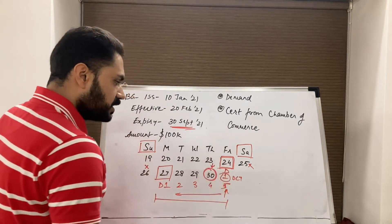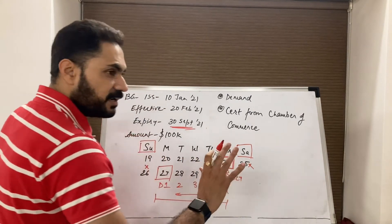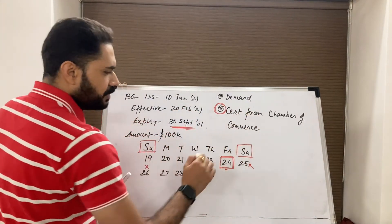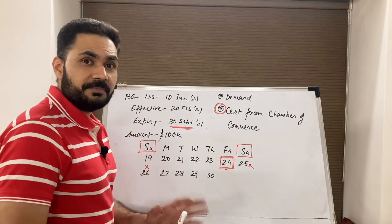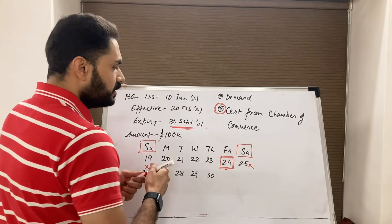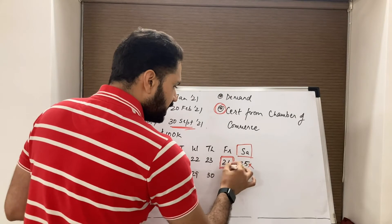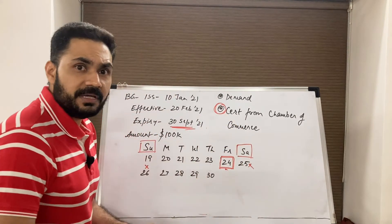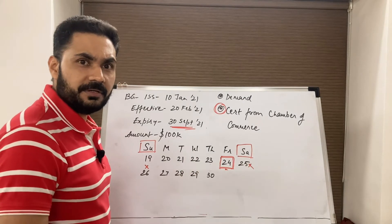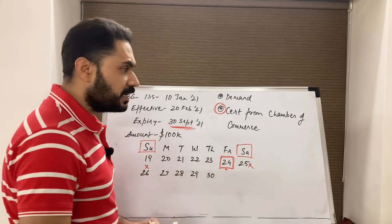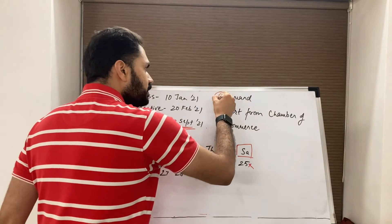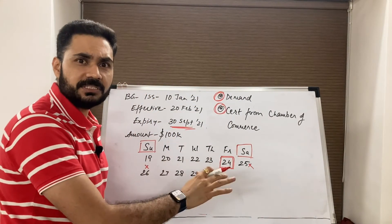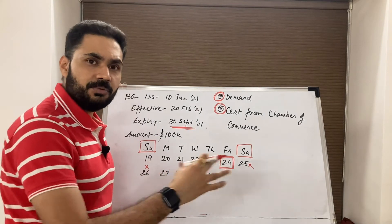Even if the beneficiary presents the demand on the expiry date itself, I will still have five business days to respond. Another case: if a certificate is presented on the 24th and the beneficiary tells me the presentation will be completed in due course, my examination period will not start unless the beneficiary gives me a go-ahead and confirms that the presentation is now complete.